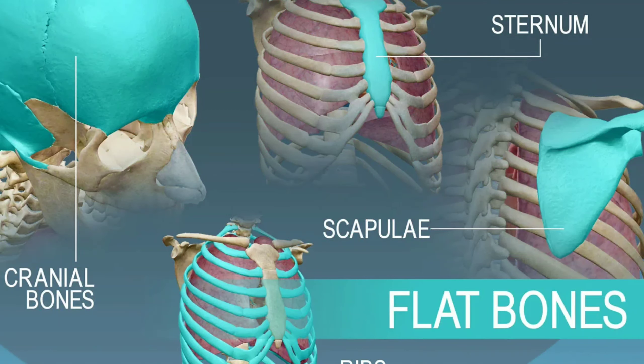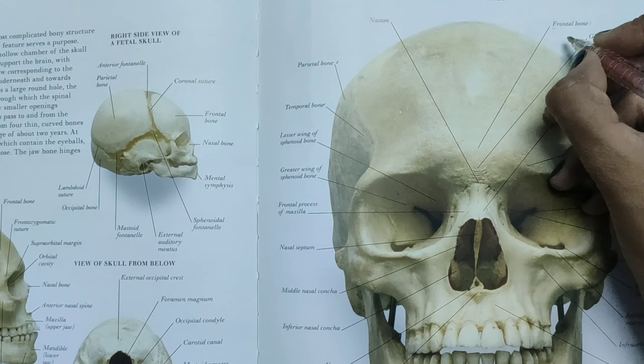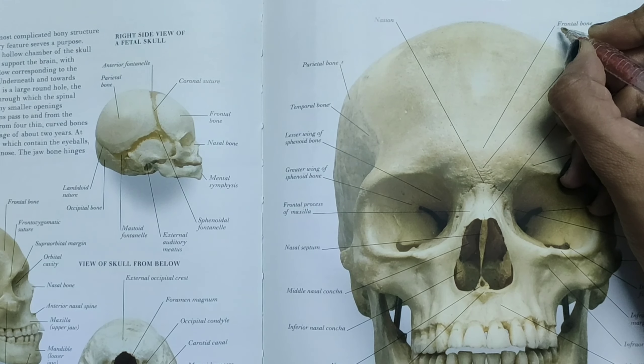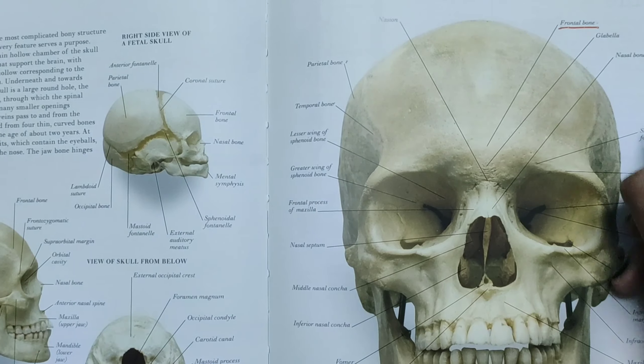Flat bones also provide a large surface area for muscle attachment, acting as a kind of shield. For example, the skull bones include the occipital, parietal, frontal, nasal, and lacrimal bones.